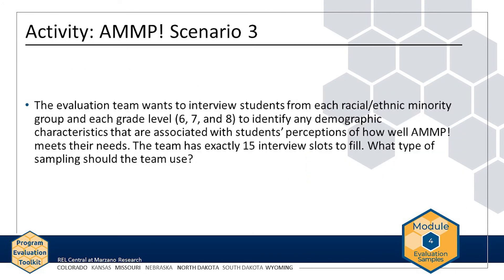The AMP evaluation team wants to interview students from each racial ethnic minority group and each grade level — 6, 7, and 8 — to identify demographic characteristics associated with students' perceptions of how well AMP meets their needs. The team has exactly 15 interview slots to fill. Because the team needs students across multiple racial ethnic minority groups and grade levels, the most applicable sampling type is purposive sampling, allowing them to purposefully select students from each group.